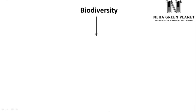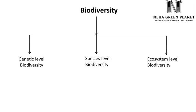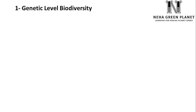Biodiversity, that means variation in life form, exists at three levels. First is the genetic level, second there are variations at the level of species, and third variations in life form are also observed at the ecosystem level.